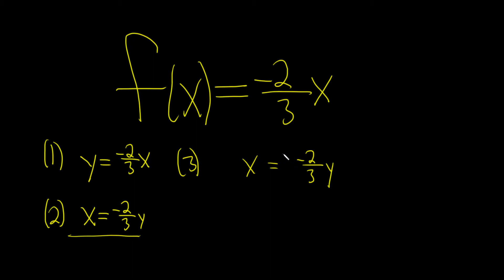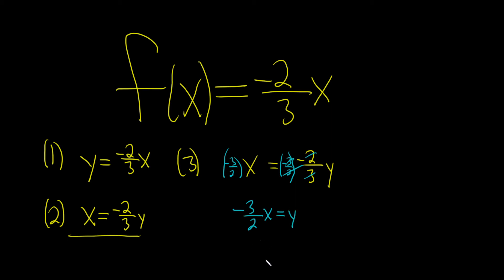So parentheses negative 3 over 2, parentheses negative 3 over 2, just like that. And look what happens — it all cancels away. So we get negative 3 over 2 times x equals y. Writing that backwards: y equals negative 3 over 2 times x.